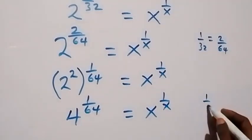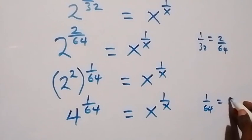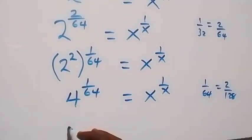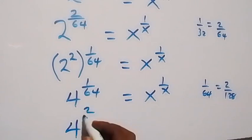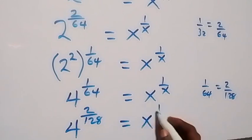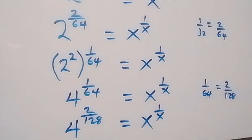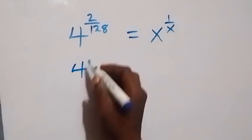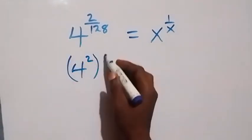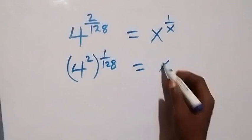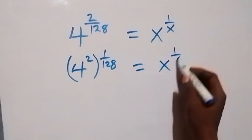We can also write 1 over 64 as the equivalent fraction 2 over 128. This can be written as 4 raised to power 2 over 128, equals to x raised to power 1 over x. From here, we can separate this as 4 raised to power 2, then raised to power 1 over 128, which is equal to x raised to power 1 over x.